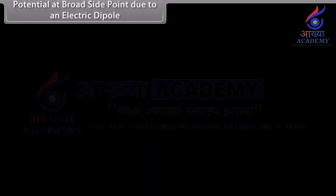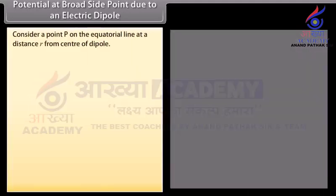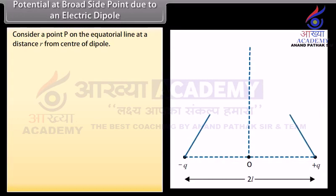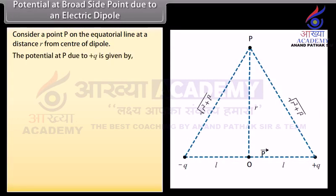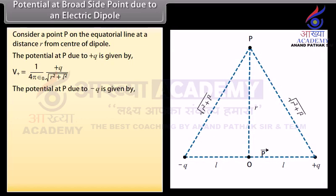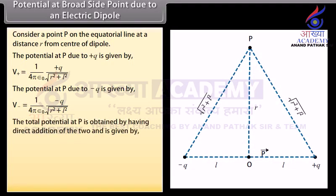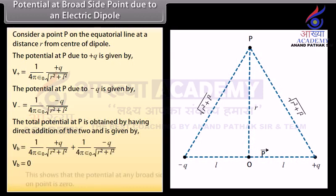Potential at a broadside point due to an electric dipole: Consider a point P on the equatorial line at distance R from the center of the dipole. The potential at P due to plus Q is V_positive equals 1 upon 4πε₀ multiplied by Q upon √(R² + L²). The potential at P due to minus Q is V_negative equals 1 upon 4πε₀ multiplied by minus Q upon √(R² + L²). The total potential V_B equals zero. This shows that the potential at any broadside-on point is zero.